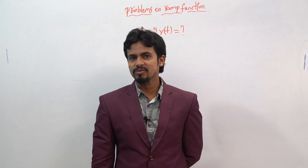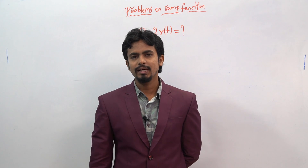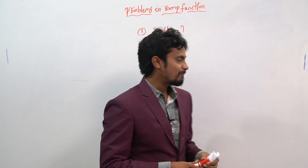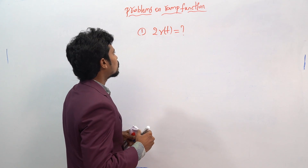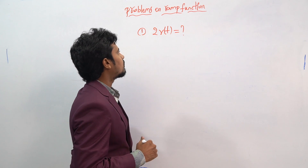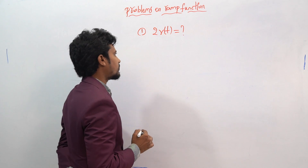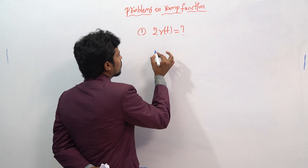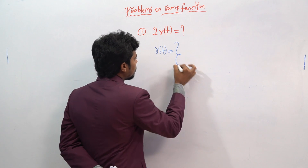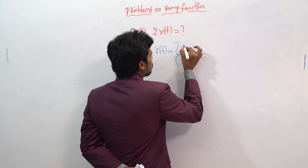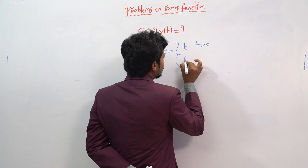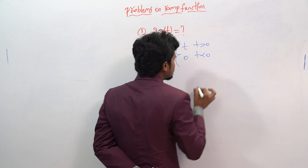Now let's see some problems based on the ramp function. The first problem is the simple problem: 2 into r(t). We already know r(t) means t for t greater than 0, and 0 for t less than 0.